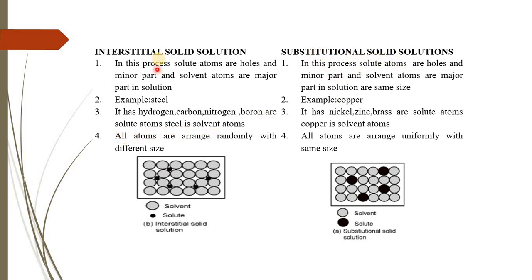In an interstitial solid solution, atoms are arranged randomly in the gaps. In a substitutional solid solution, the atoms are arranged uniformly with different-sized atoms replacing each other. If you include the diagram with these two points, you will earn marks.